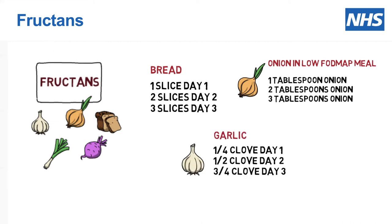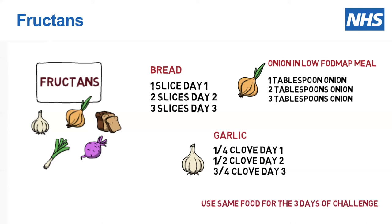Garlic is the third fructan that I think is really important for people to trial, because it appears hidden in lots of meals and you really need to know whether garlic is an issue or not. The quantities suggested for the challenge are a quarter of a clove in a low FODMAP meal on day one — a casserole or bolognese with no other FODMAPs, so no onion. On day two it would be half a clove, and on day three, three quarters of a clove, and you would see whether you get symptoms.